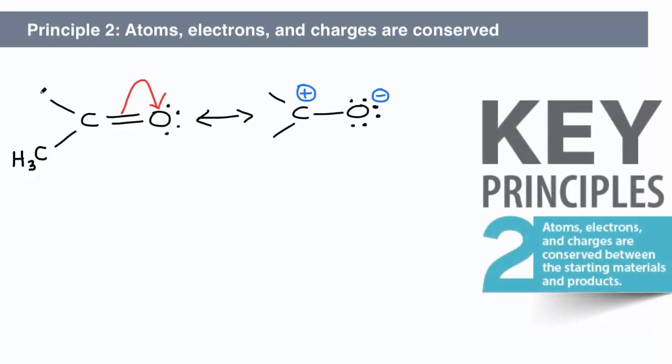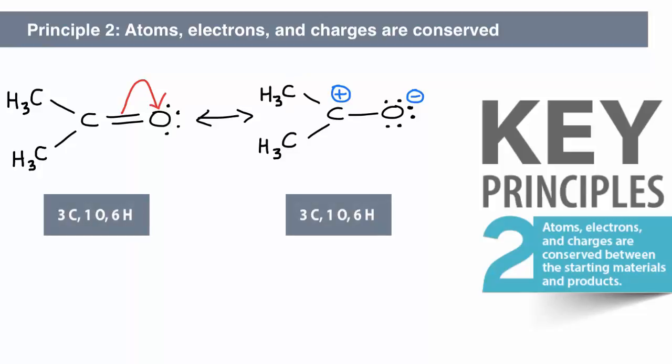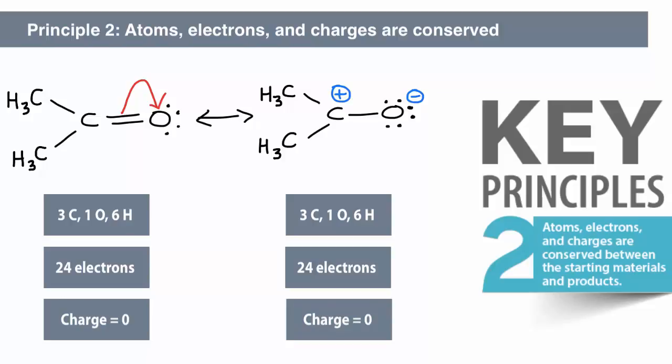The second key principle is that atoms, electrons, and charges are conserved between starting materials and products. We have three carbon atoms and one oxygen atom in both the starting structure and the final one. There is the same number of electrons on both sides, and there is the same overall charge on both sides.